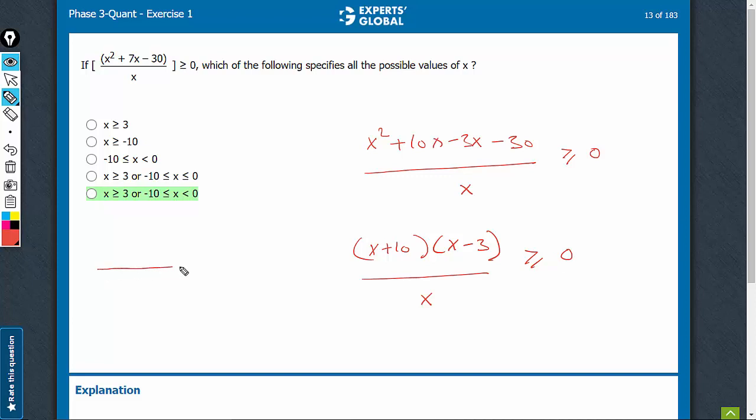The three nodes are negative 10 for x plus 10 equal to 0, positive 3 for x minus 3 equal to 0, and 0 for x equal to 0.